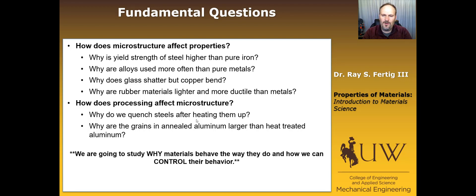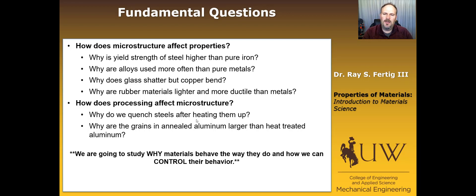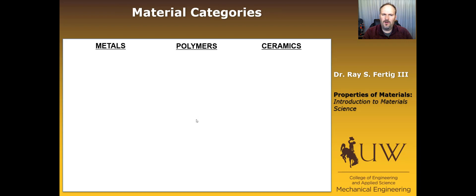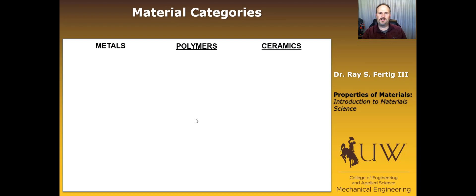Globally, I want you to come away with the idea that we're going to study why materials behave the way that they do and how we can control that behavior. I want to give you a brief overview of categories of materials. You're familiar with metals, ceramics, and polymers — these are the three broad classes. What makes a metal different than a polymer? What makes a polymer different than a ceramic?